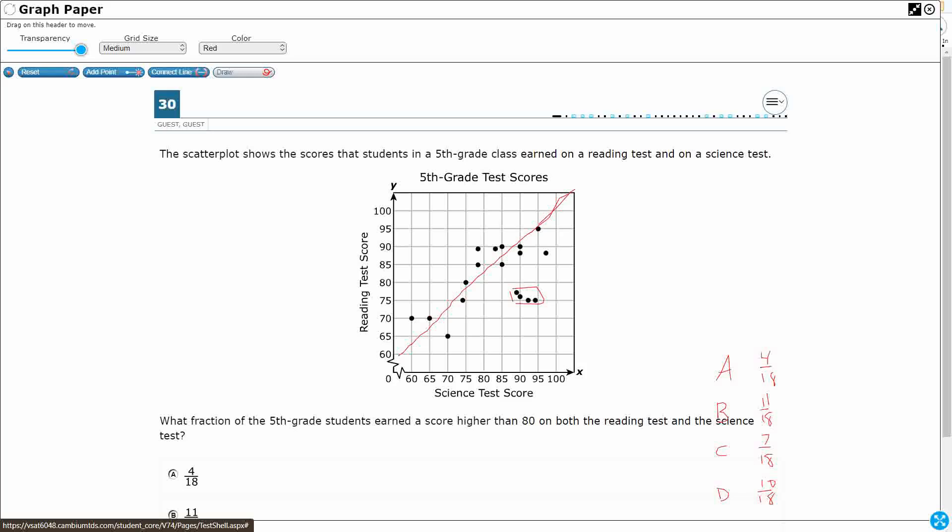Alright, so the question says, what fraction of 5th grade students earned a score higher than 80 on both reading and science? Okay, higher than 80.